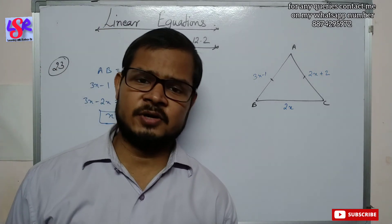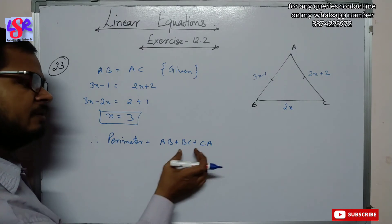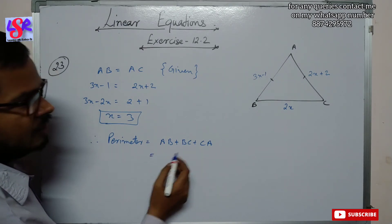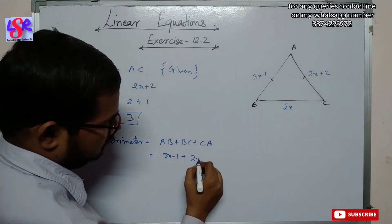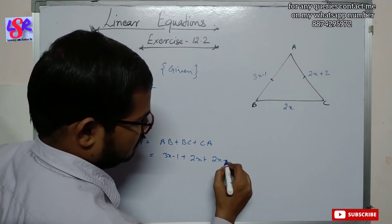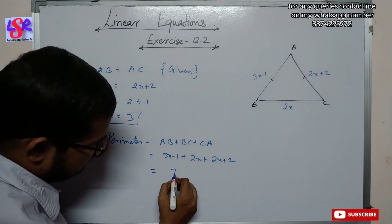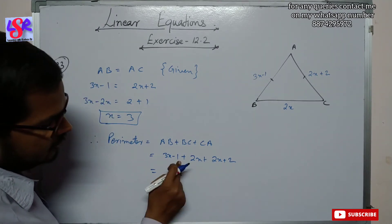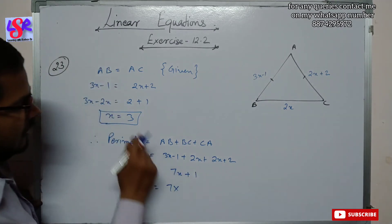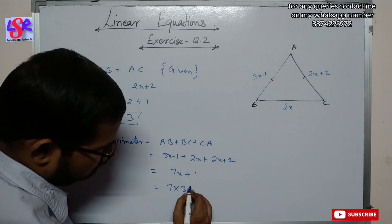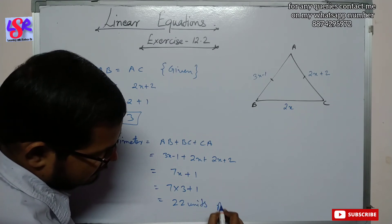Now we find the perimeter. Perimeter = AB + BC + CA = (3x − 1) + 2x + (2x + 2) = 7x + 1. Substituting x = 3: 7 × 3 + 1 = 21 + 1 = 22 units as the answer.